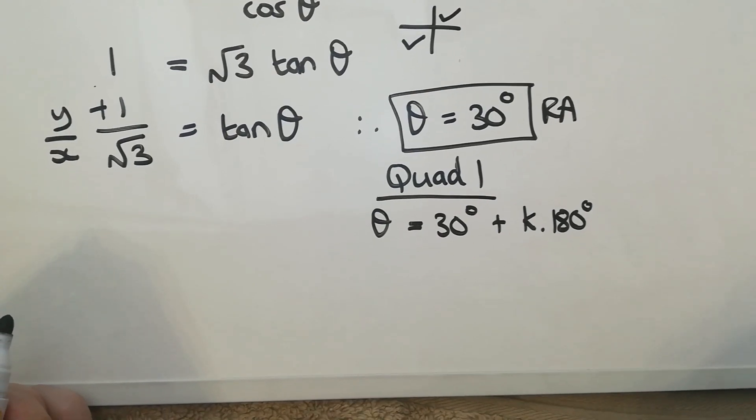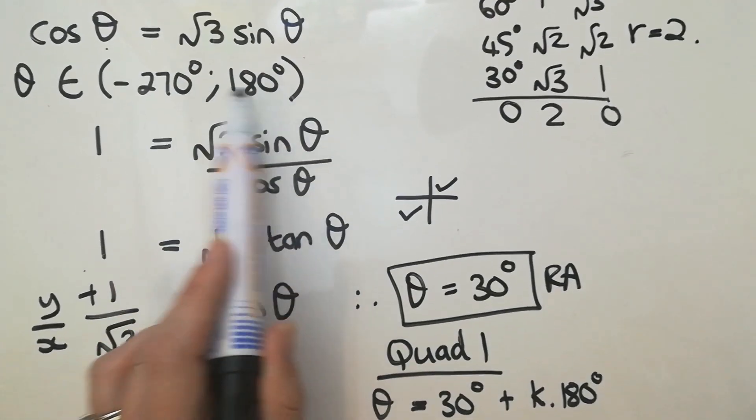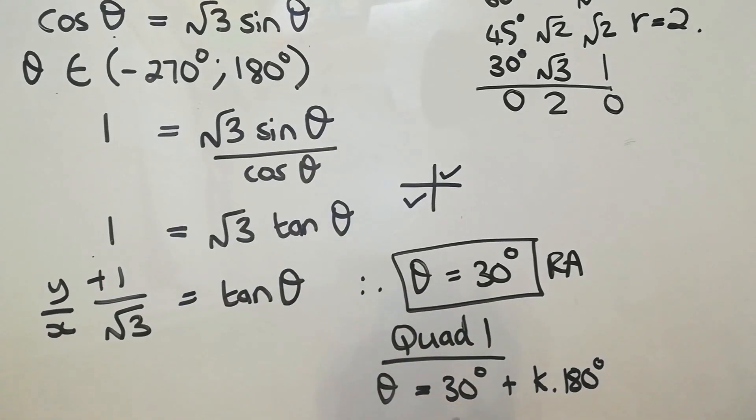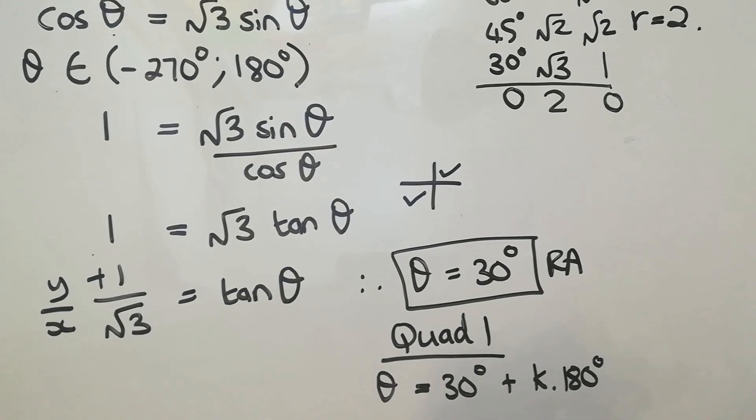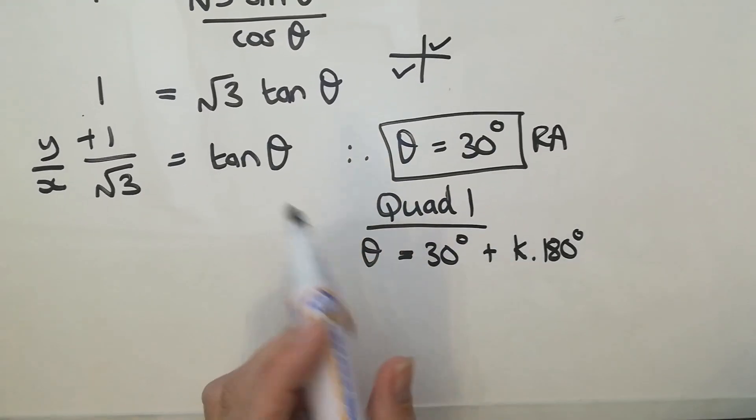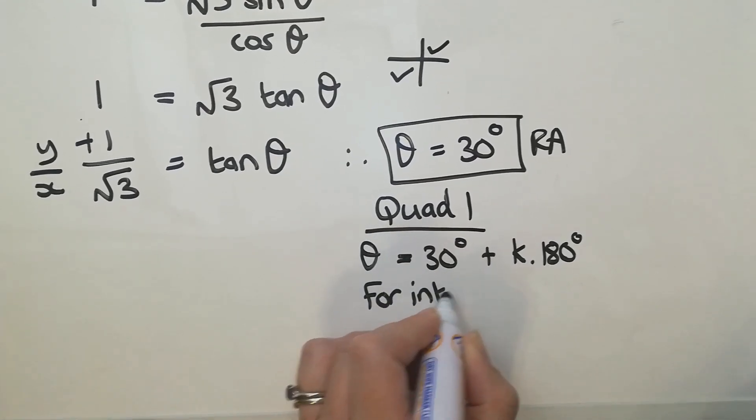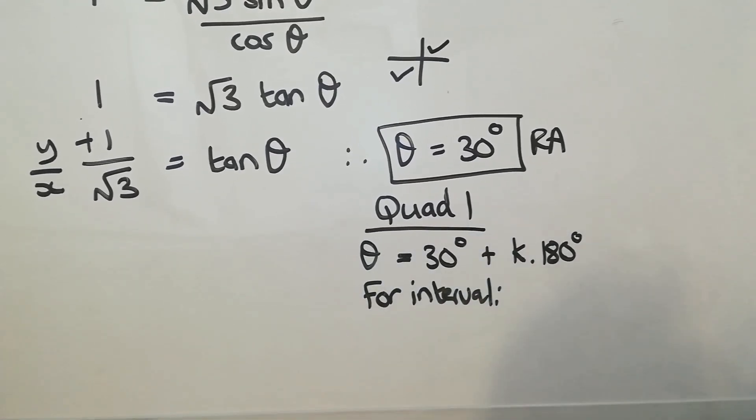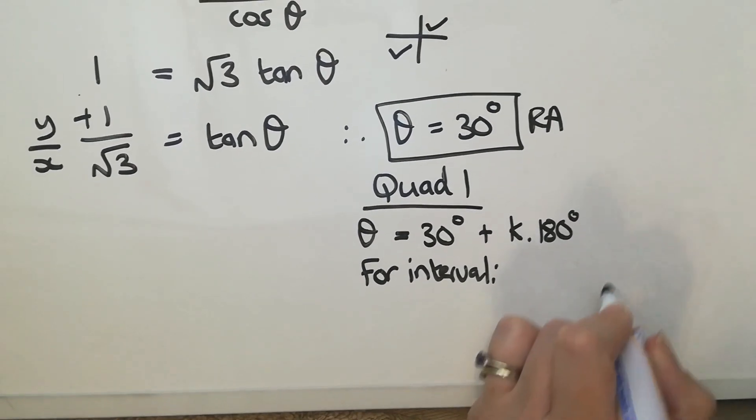And then what I do need to do is I need to get my answers that fit into that boundary over there. So I have the one answer. Remember, I don't need another one because it repeats. And I don't have to do anything fancy at this point. I have my answer. So now I need to pop it into the interval. Okay, and that's when I sub in various numbers for k. So we'll test them out over here.